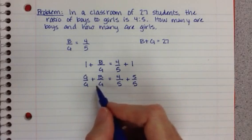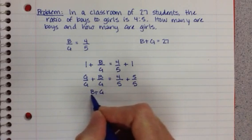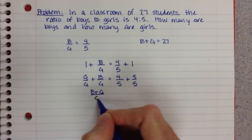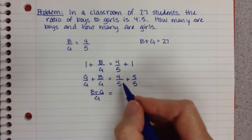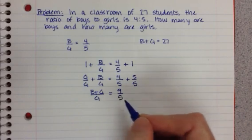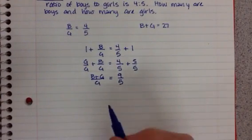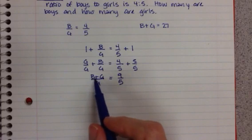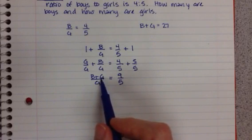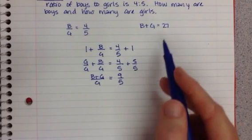So now what we have here, and we're going to use commutative property to switch this around, is B plus G over G, and 4 and 5 is 9, so we have 9 fifths. Well, if you notice this, B plus G looks familiar because we have it over here, B plus G, which is equal to 27.